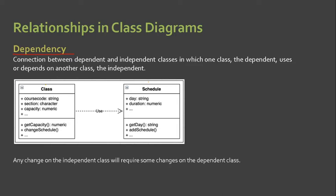Dependency exists between two elements if changes to the definition of one element affect the other. In this example, the Schedule here is our independent class.